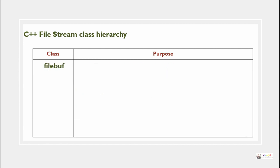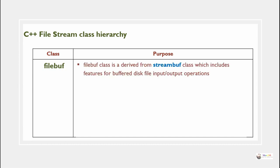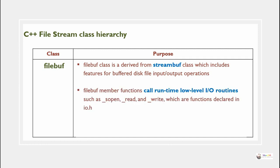filebuf is a class derived from the streambuf class. It includes features for buffered disk file input and output operations. filebuf consists of methods for primitive file handling operations. Its member functions call runtime low-level input and output routines such as sopen, read, and write, which are functions declared in io.h.